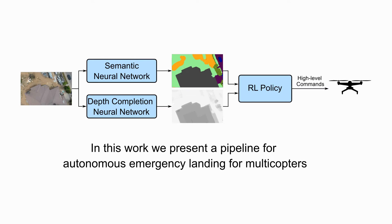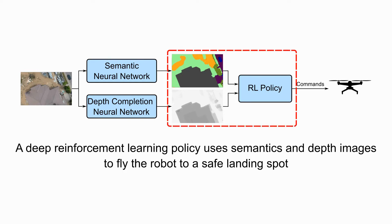We present a pipeline for emergency landing of multirotor unmanned aerial vehicles, short UAVs. A deep reinforcement learning policy is trained to fly the robot to safe areas as quickly as possible by using semantic and depth information.